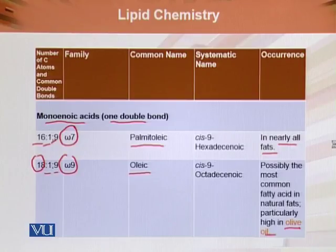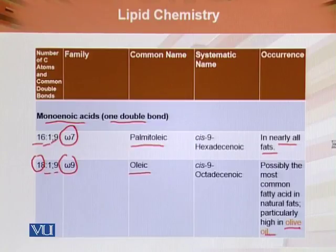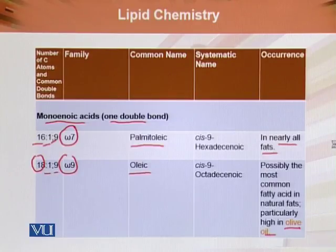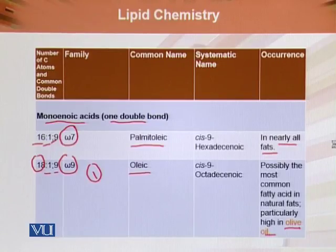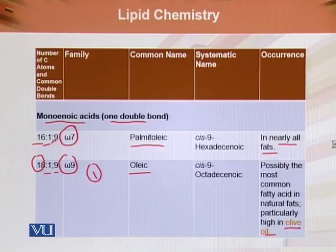In olive oil, oleic acid is the most common fatty acid present in the highest concentration. It is an omega-9 fatty acid with only a single bond. As discussed in previous modules, if there are multiple double bonds and hydrogenation is performed, trans fats can form, which are undesirable and injurious to health. However, since olive oil has only one double bond, there is almost no chance of trans fat formation. Therefore, olive oil margarines available in the market contain almost nil trans fats and are not injurious to health.